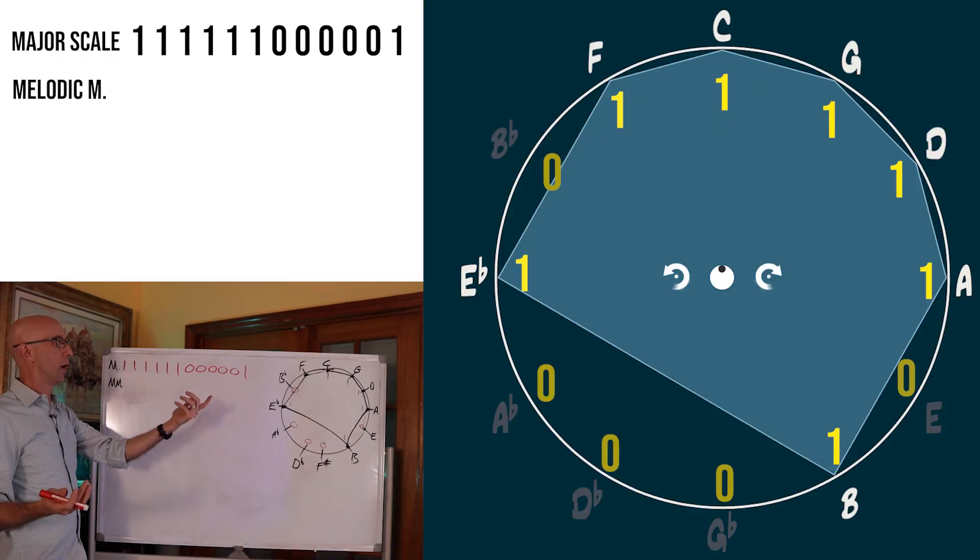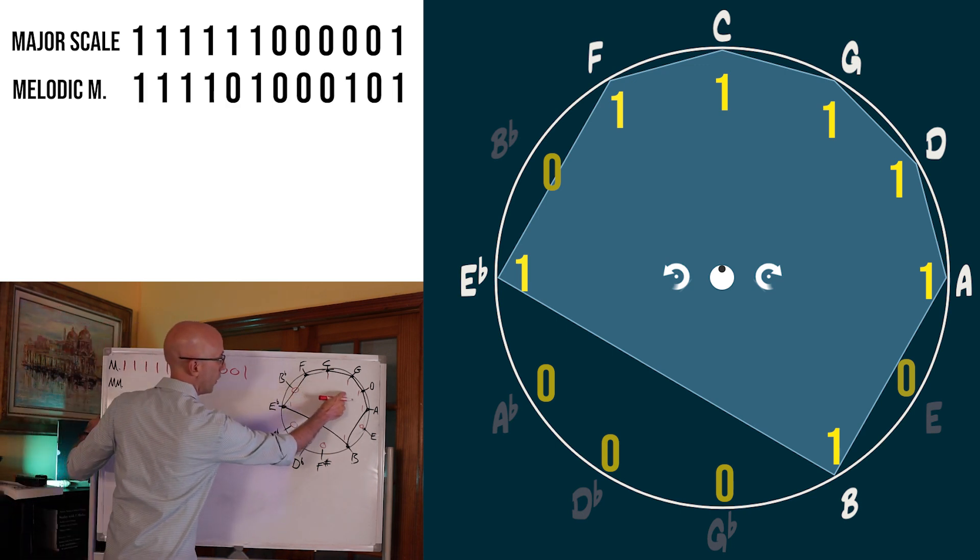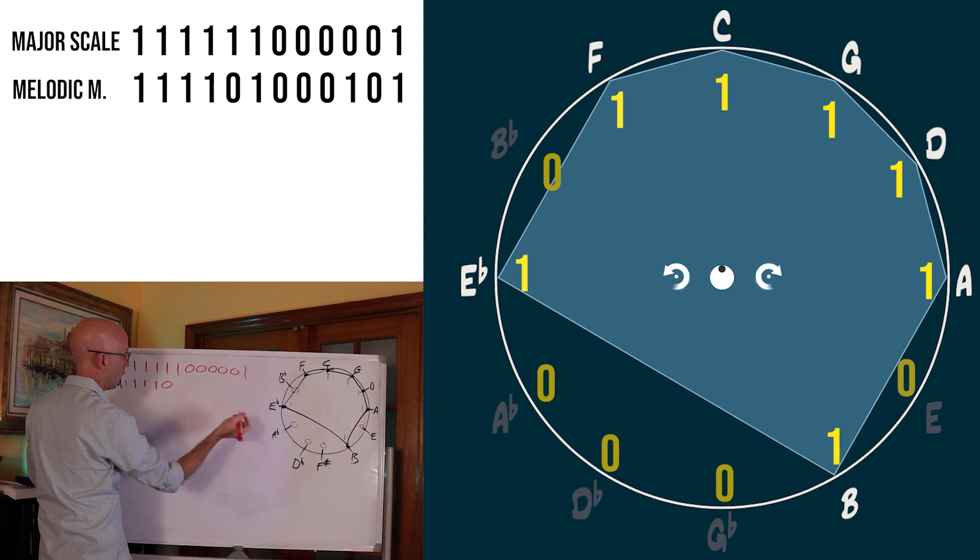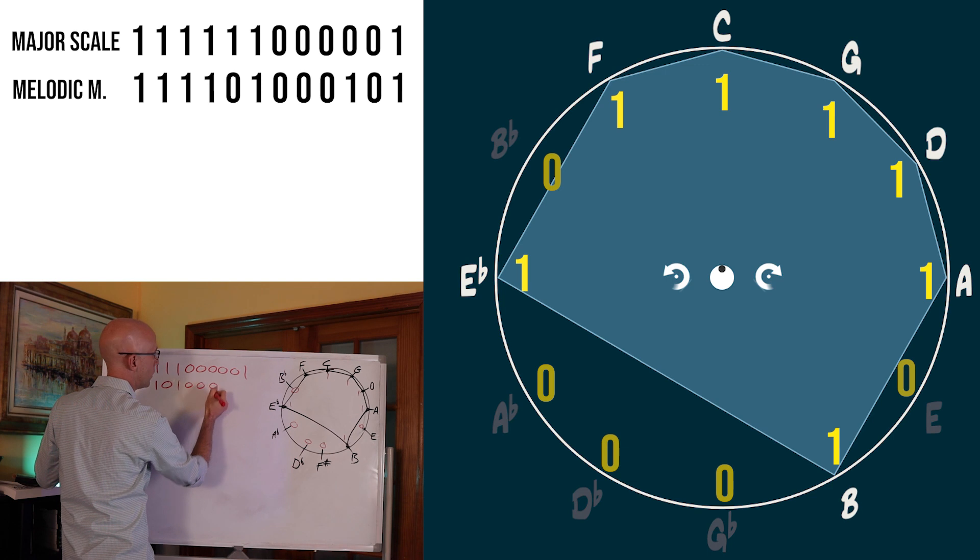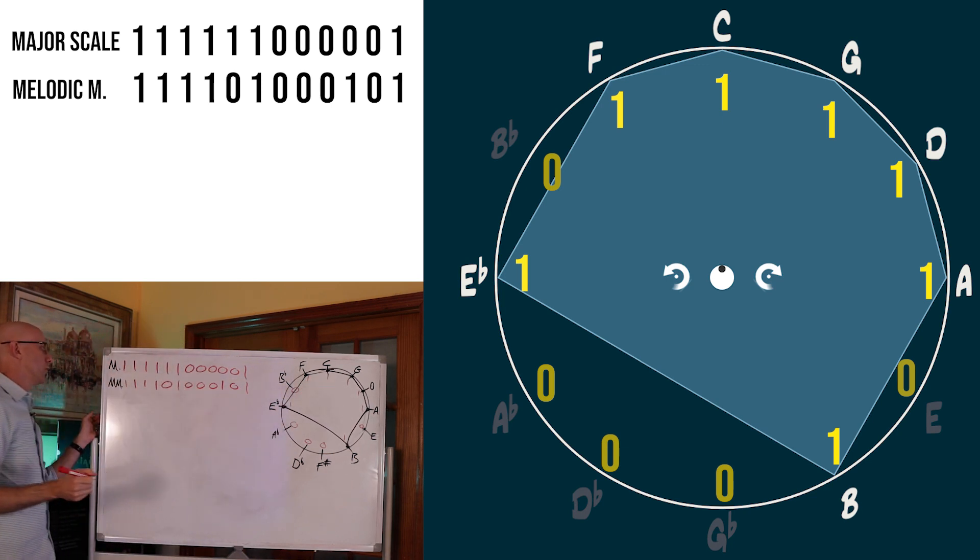Here we have melodic minor. Let's look at melodic minor's unique binary number. Now we would have 1, 1, 1, 1 - four ones in a row. A 0. A 1 again for the B. Three more zeros. A 1. A 0. And that should be a 1 also. So there we have our melodic minor expressed using that binary system.